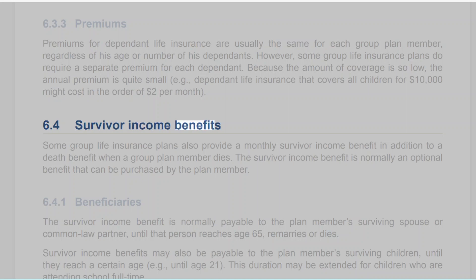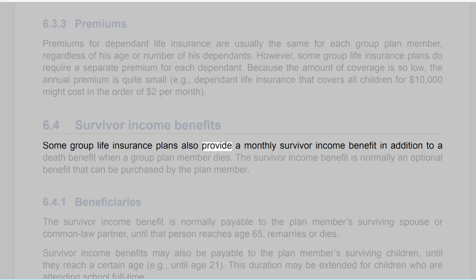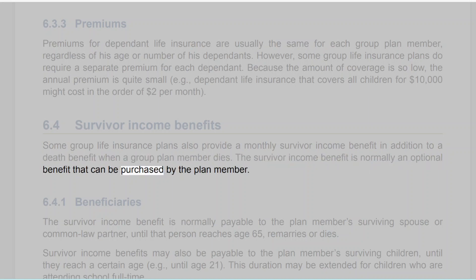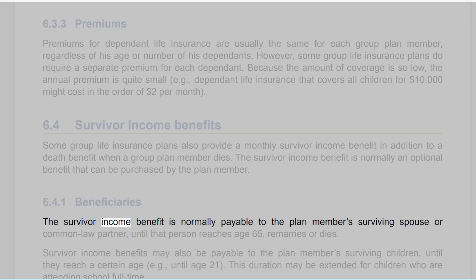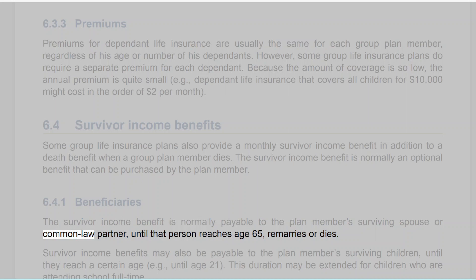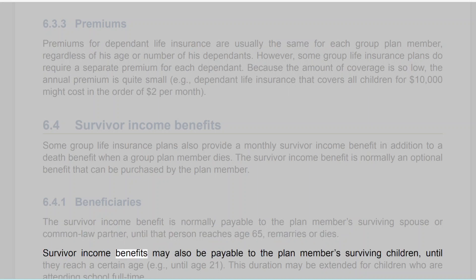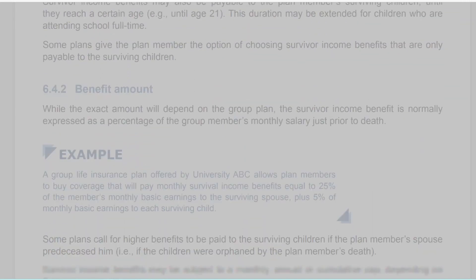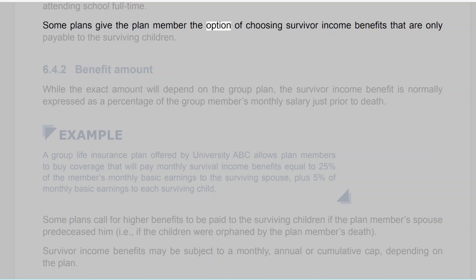6.4 Survivor Income Benefits. Some group life insurance plans also provide a monthly survivor income benefit in addition to a death benefit when a group plan member dies. The survivor income benefit is normally an optional benefit that can be purchased by the plan member. 6.4.1 Beneficiaries. The survivor income benefit is normally payable to the plan member's surviving spouse or common-law partner until that person reaches age 65, remarries, or dies. Survivor income benefits may also be payable to the plan member's surviving children until they reach a certain age, for example until age 21. This duration may be extended for children who are attending school full-time.